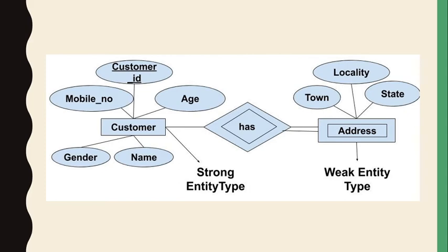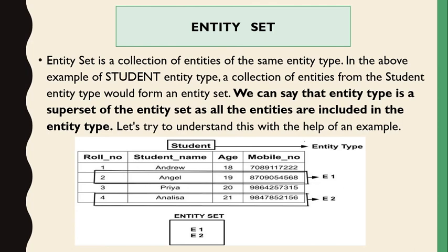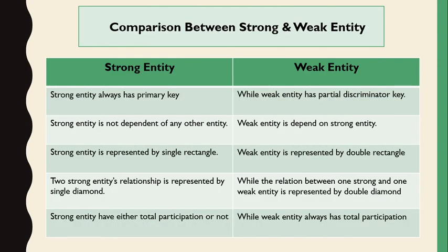Now we discuss entity sets. An entity set is the collection of entities of the same entity type. In the above example, the student entity type is the collection of entities from the student table. We can say that entity type is the superset of the entity set as all entities are included in the entity type. In the student table, entity one and entity two collected together form entity set E1 and E2. Entity sets are collections of the same entities.